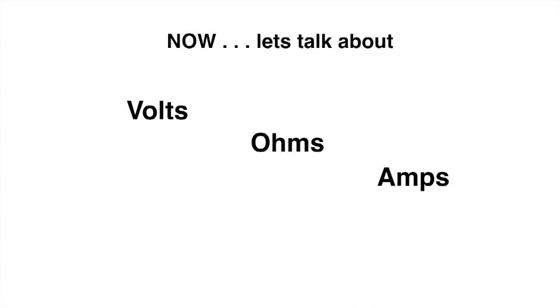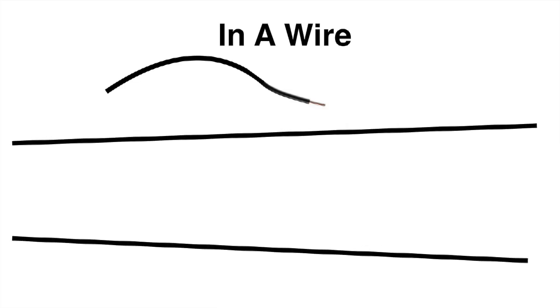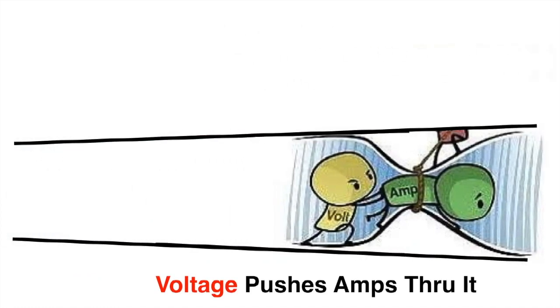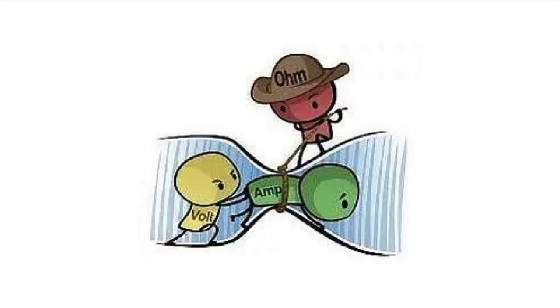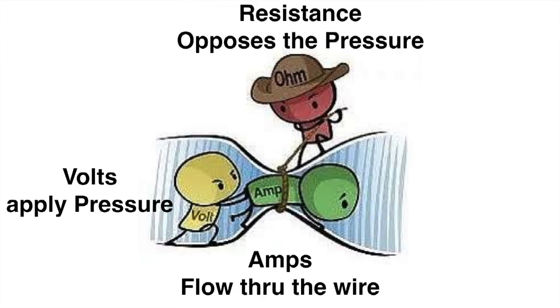Now let's talk about volts, ohms and amps. But I'm going to change the words. I'm going to change volts to pressure, ohms to work and amps to flow. Now we know this in a wire, we'll draw the wire here, you have voltage and that voltage pushes amps through the wire and volts are applying the pressure. The amps are what flow through the wire and resistance opposes that pressure or opposes the push and that enables the load to work.